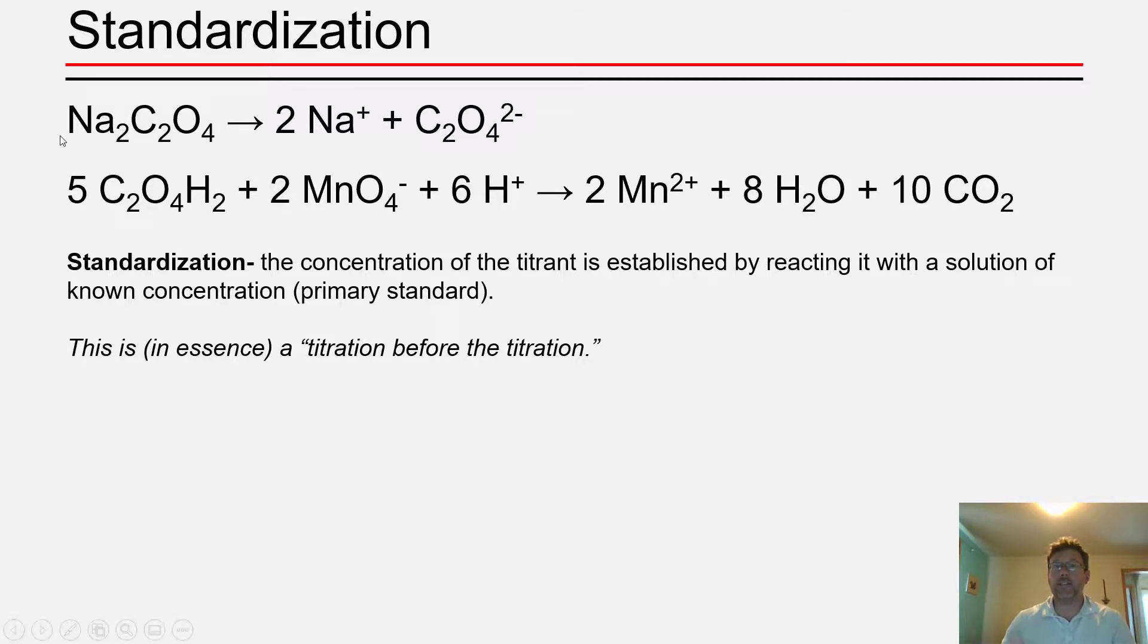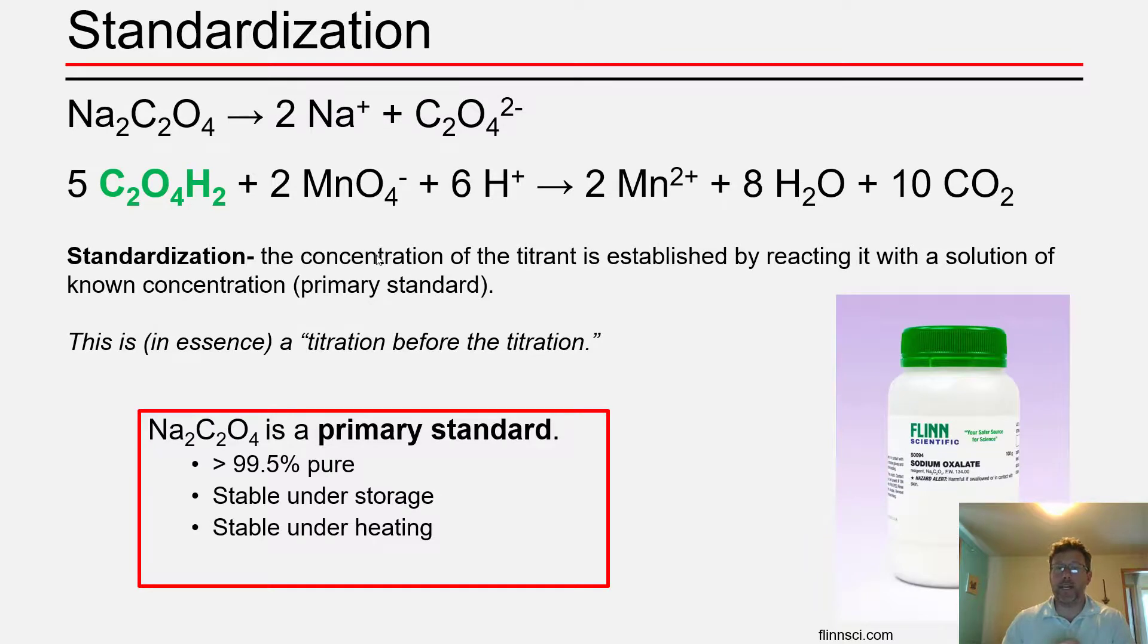Oxalic acid is a primary standard. It's a chemical that you can buy and its supplier will certify that it's better than 99.5% pure. It's stable under low levels of heating, it's stable under storage, and it's stable against oxidation. So you can keep it on the stockroom shelf for a long time and when you need to pull it out and use it, the only thing you have to do is heat it for a short period in the oven to drive off any water that may have stuck to the crystals during its storage, and it's still pure and it's ready to go. So sodium oxalate counts as a primary standard and you can buy it from a number of different chemicals providers. The bottle we're showing here is from Flynn Scientific.